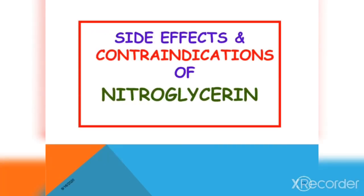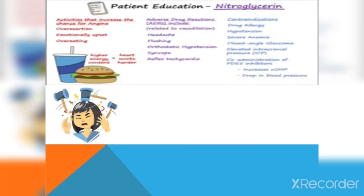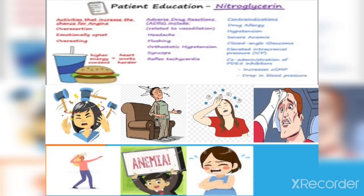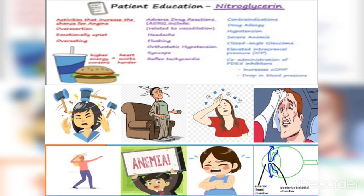Now let's talk about the side effects and hot medications of nitroglycerin. Adverse drug reactions are mostly related to vasodilation, and include throbbing headache, flushing, postural hypotension, syncope, and reflex tachycardia. Contraindications include drug allergy, hypotension, severe anemia, closed-angle glaucoma, elevated intracranial pressure, and concurrent use with phosphodiesterase inhibitors like sildenafil, which is used in erectile dysfunction. Combining these can enhance cyclic GMP levels, cause a marked drop in blood pressure, and precipitate MI. Patients should also be advised to avoid activities that increase the chance for angina, including physical exertion, tension, and overeating.